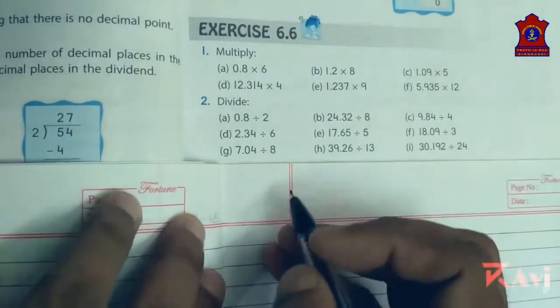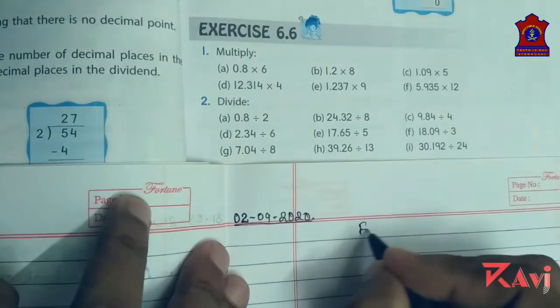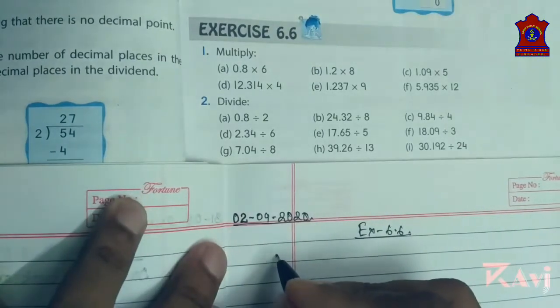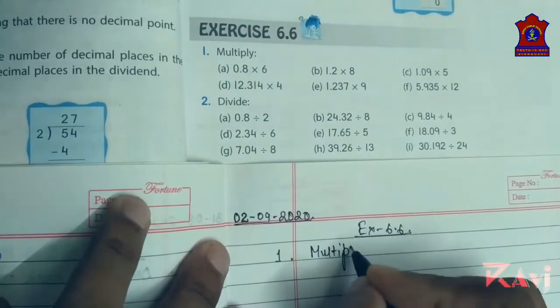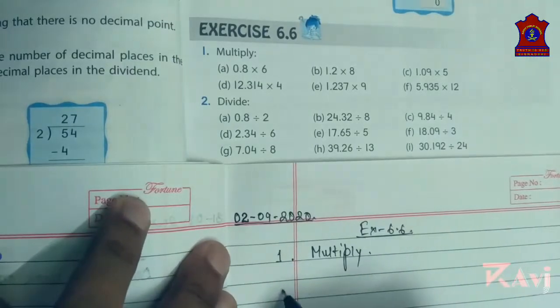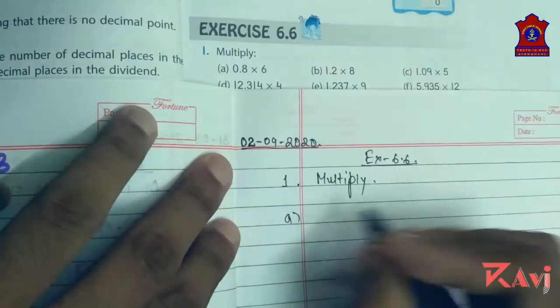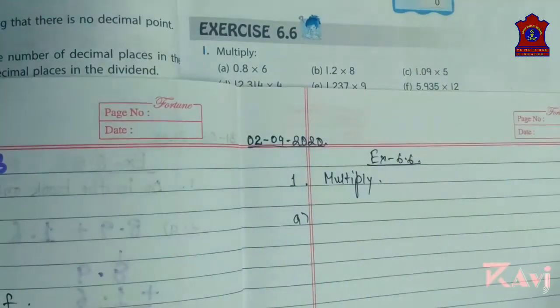So here we are going to start exercise 6.6, portion number 1: multiply. Here portion number 0.8 multiplied by 6.